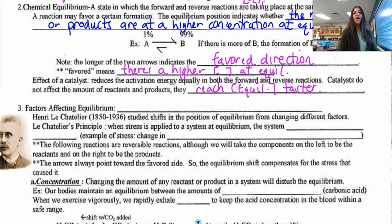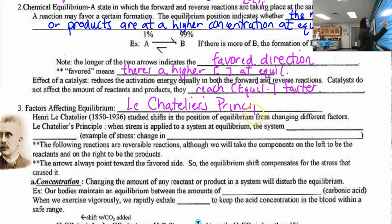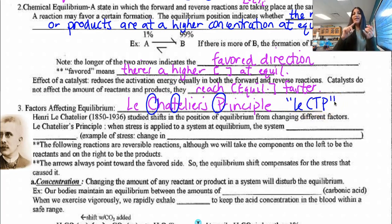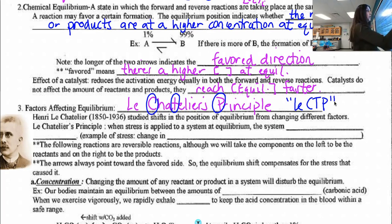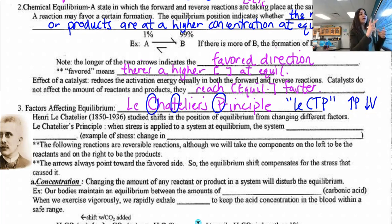The factors affecting equilibrium — this is called Le Chatelier's principle. I'm going to circle C, T, and P. In kinetics, we said concentration, catalyst, temperature, and particle size. But now for equilibrium, C is concentration, T is temperature, and P is pressure. Keep in mind that pressure should be of a gas. As pressure increases, volume decreases — they're inversely related, just like PV over T. Le Chatelier's principle states: when stress is applied to a system at equilibrium, the system will shift to relieve that stress.